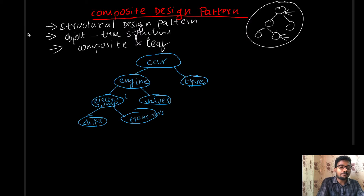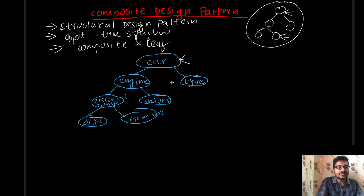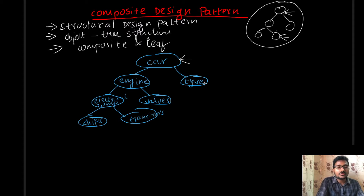First, we will classify the composite and leaf objects in this complex object. The composite objects would be car, engine, and electrical components. The reason is that a composite object is one which has child objects. Here, car has engine and tire as child objects, and engine has electrical components and valves as child objects.